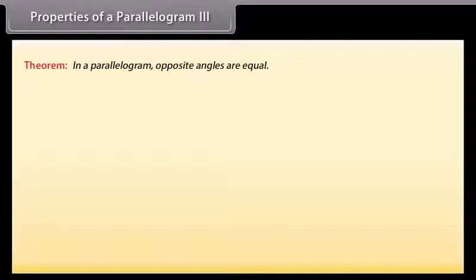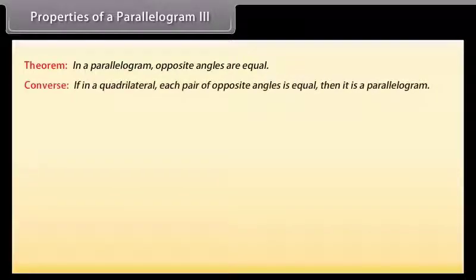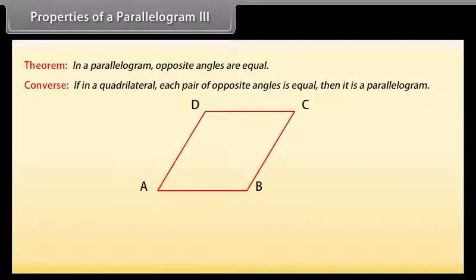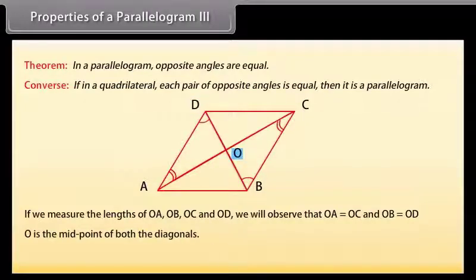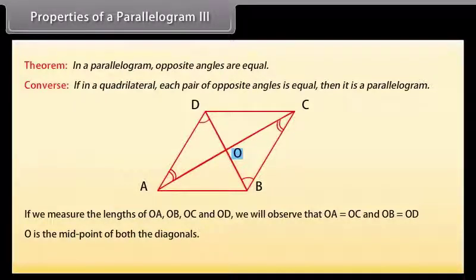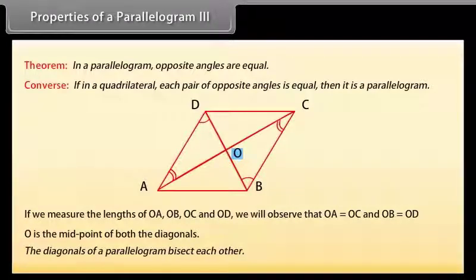Another property of a parallelogram says that in a parallelogram, opposite angles are equal. The converse states that if in a quadrilateral each pair of opposite angles is equal, then it is a parallelogram. Draw parallelogram ABCD with both diagonals intersecting at point O. We observe that OA = OC and OB = OD — that is, O is the midpoint of both diagonals. This gives us the theorem: the diagonals of a parallelogram bisect each other.